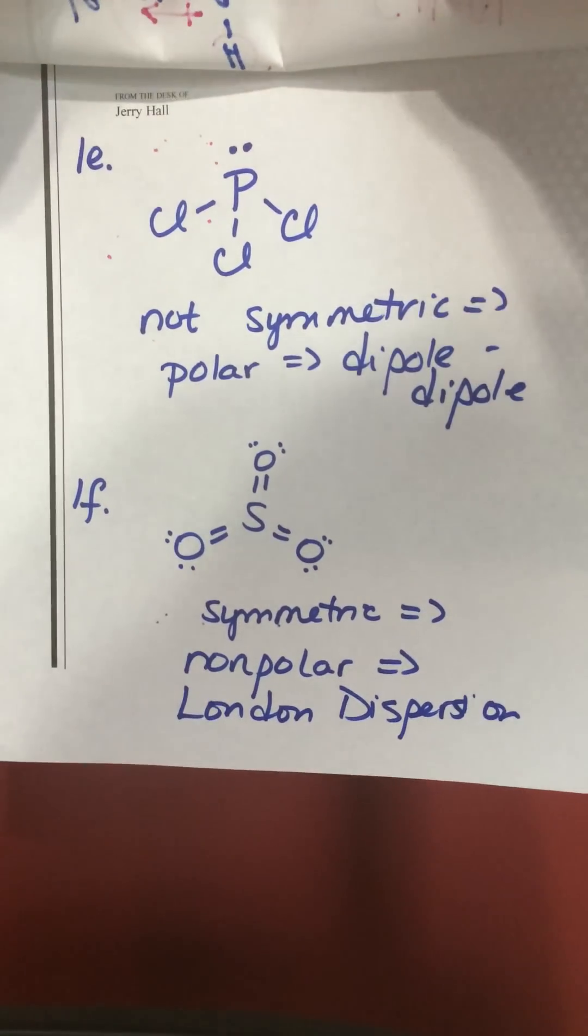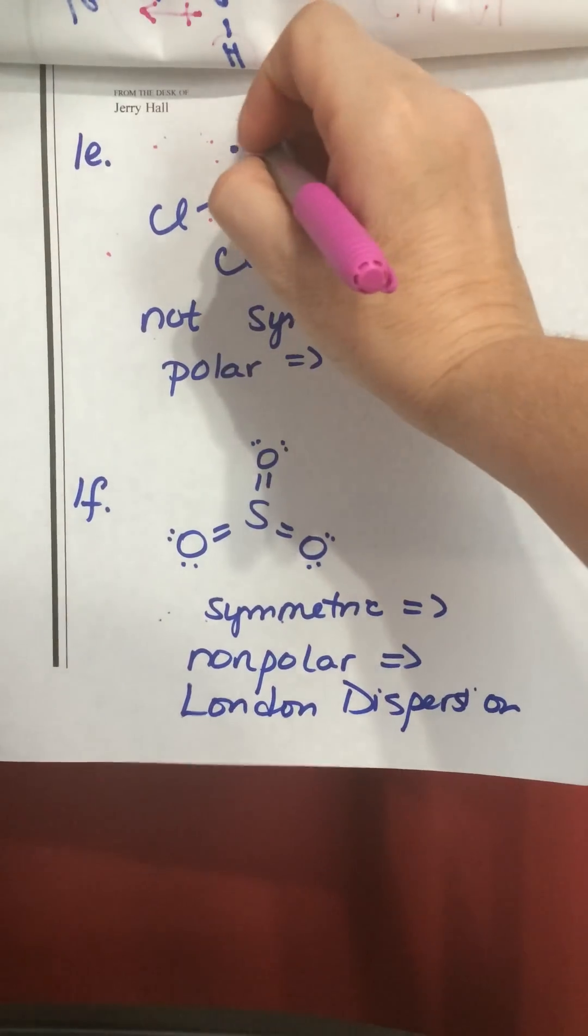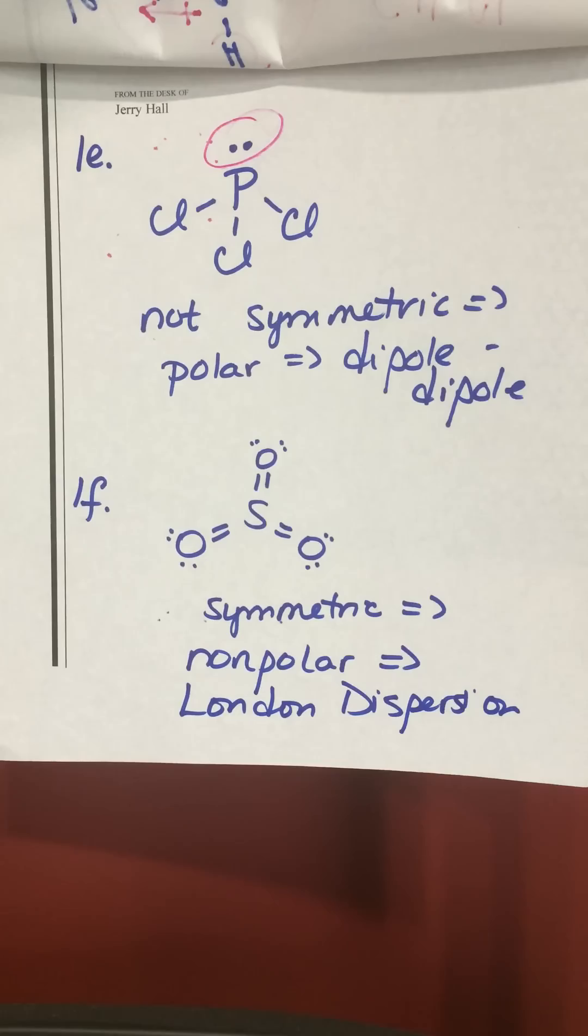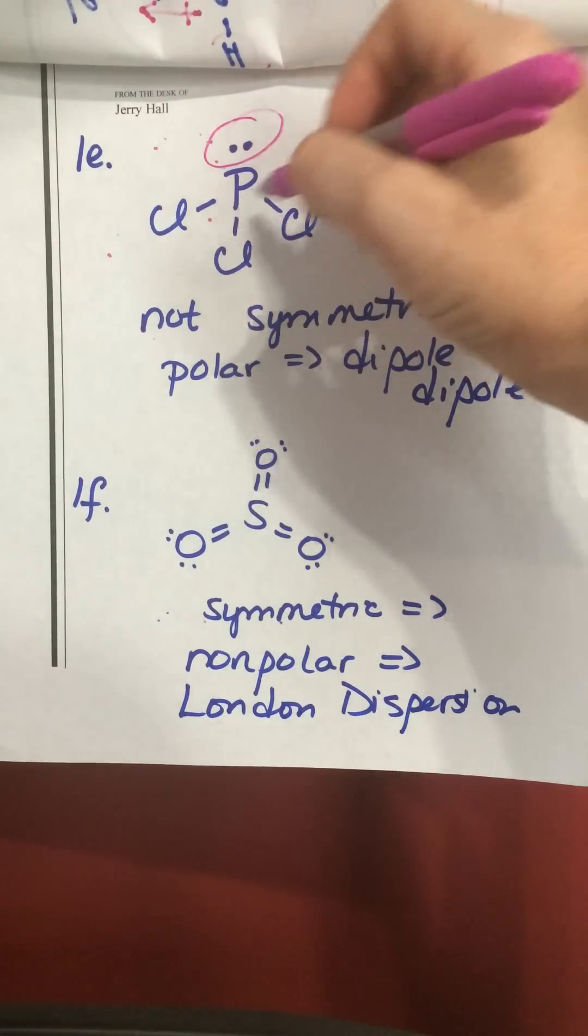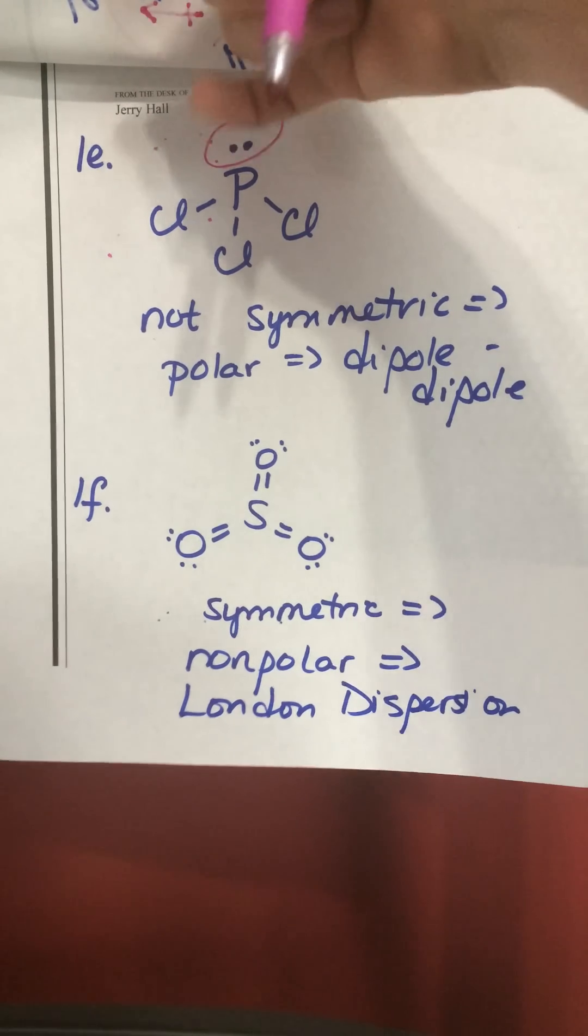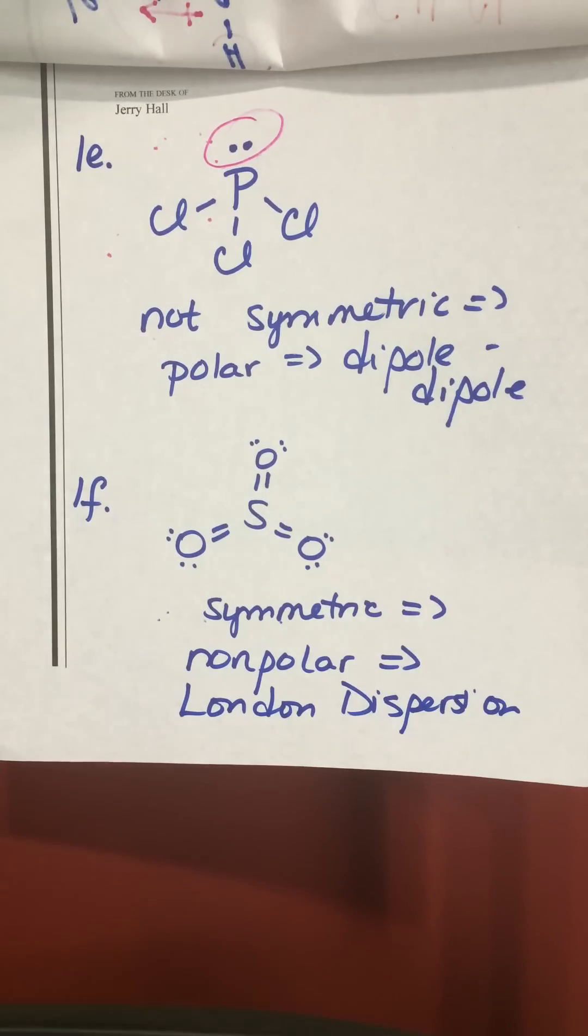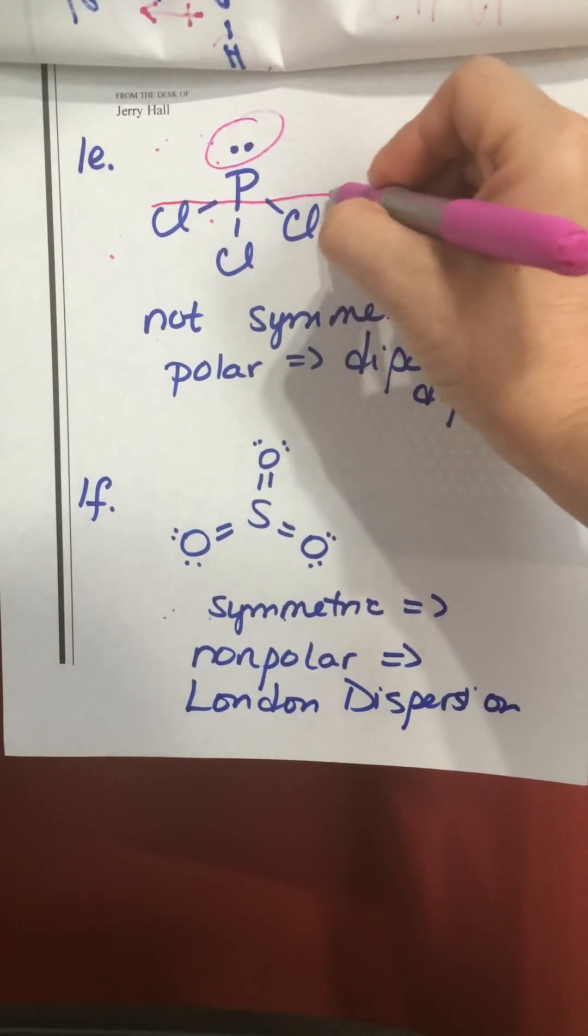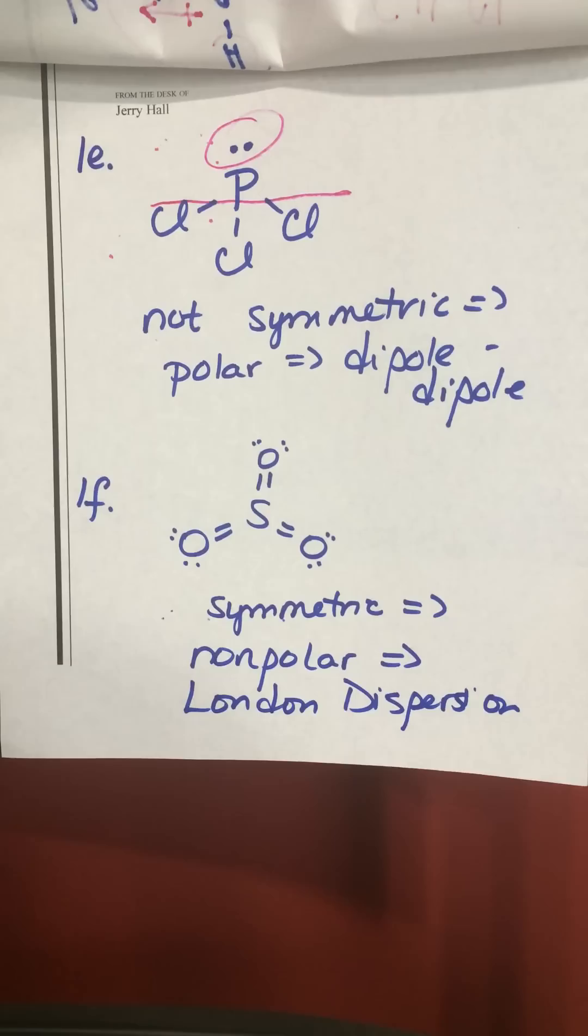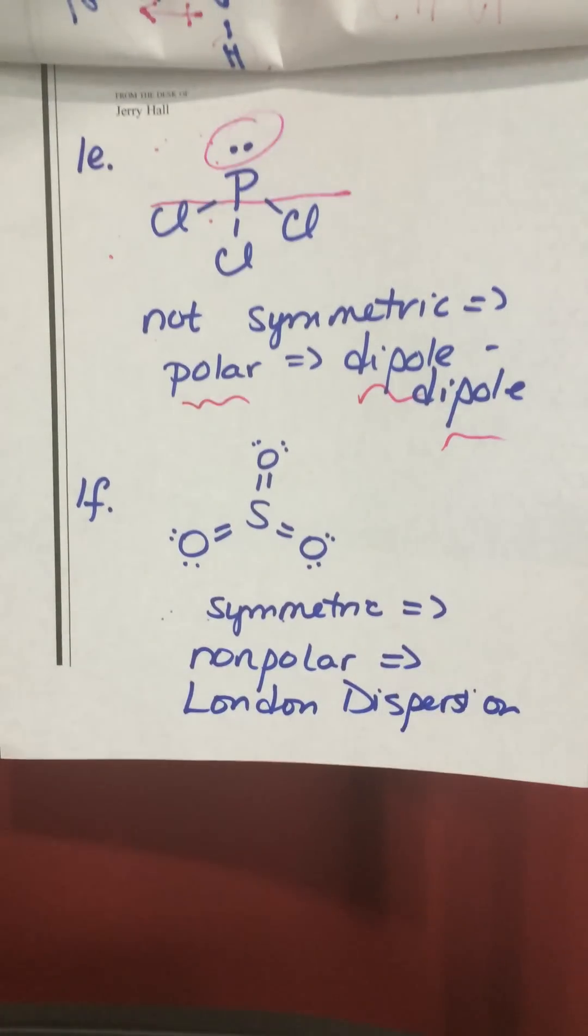Phosphorus trichloride. If you draw the Lewis structure, you discover there is a non-bonding pair of electrons on the phosphorus. The electron domain shape would be tetrahedral, but the molecular shape would have a trigonal pyramidal shape. It is not symmetric. If you think about putting a mirror here, the top and bottom are not identical. It's not symmetric, therefore it is polar, and dipole-dipole are the main intermolecular force.